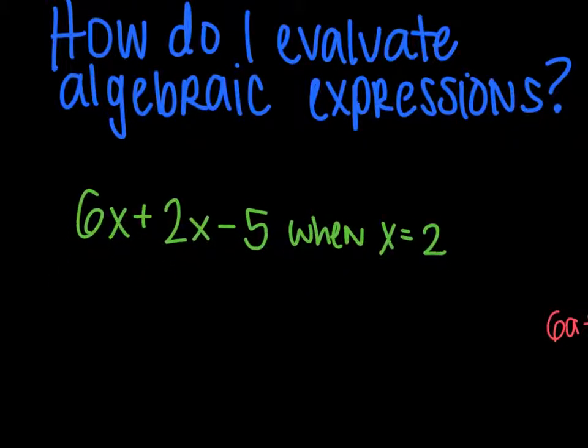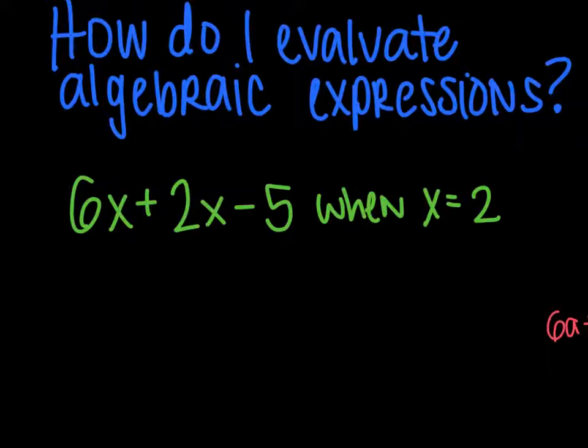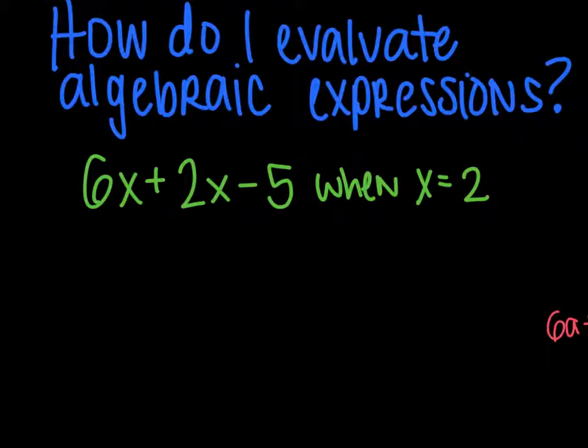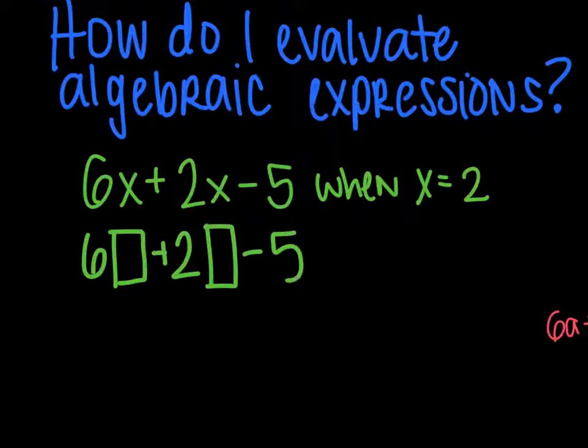Here is problem number one. 6x plus 2x minus 5 when x is 2. And obviously you're being asked to evaluate here. So this is what you're going to do. You're going to rewrite the problem. Except anywhere you have an x, I like to kind of put a box to start, just so you get the idea of what's happening here. And then you're going to plug in the number. So in this case I'm plugging in a 2 in each spot I see the x. Now you have to know what operation is happening to know what to do. So between here, 6x, that's 6 times x. There's an invisible dot there.